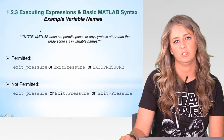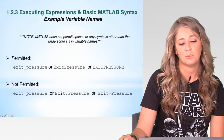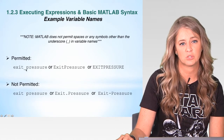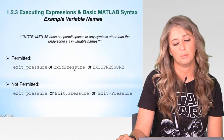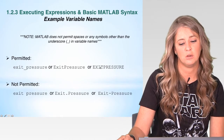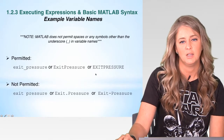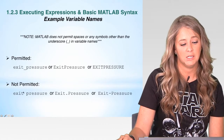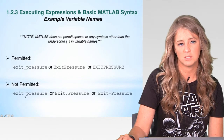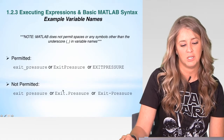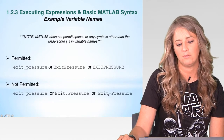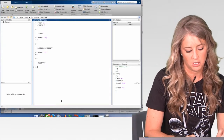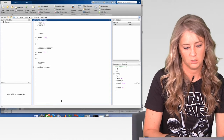Here are some examples of permitted and not permitted variable names. You can use exit_pressure with the underscore symbol, or use a combination of uppercase and lowercase letters. What is not permitted is a space between words, a dot, or a hyphen — for example, exit dot pressure or exit hyphen pressure. If you try to use the hyphen, MATLAB will give you an error because it does not permit that. Also, typing exit space pressure turns purple, meaning MATLAB tries to perform a different computation.